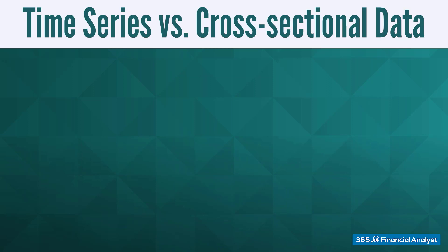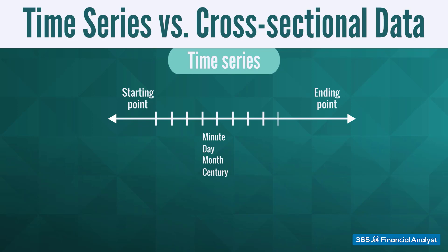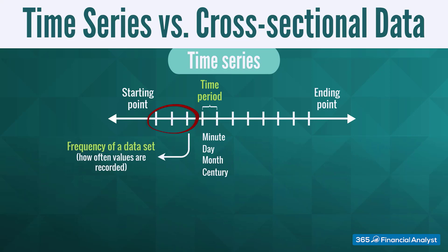There aren't any limitations regarding the total time span of time series. It could be a minute, a day, a month, or even a century. All we need is a starting and an ending point. Usually, there are many other points in between the start and the end time. The interval of time between recording one point and the next is called a time period, while frequency of the data set is a term reflecting how often values are recorded. To be able to analyze time series in a meaningful way, all time periods must be equal and clearly defined, which would result in a constant frequency.